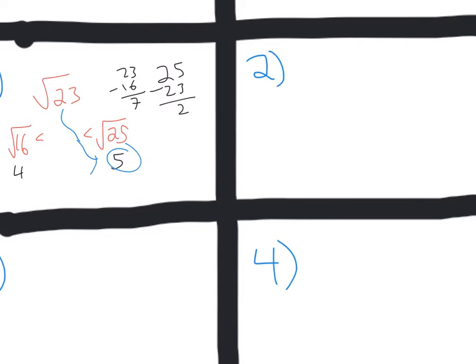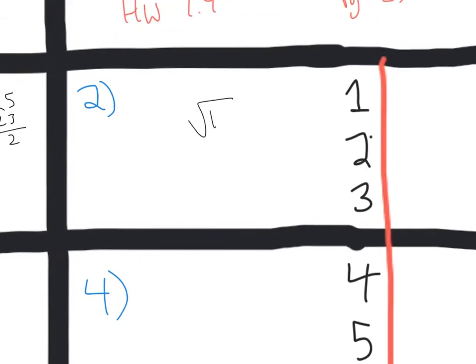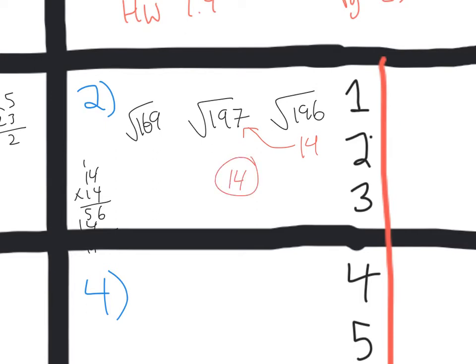Number 2, 197. Let's estimate what integer that would be really close to. I know that I can probably look at square root of 13, which is 169, and 14 would be 196. That's really close. And we know the square root of 196 is 14, so I'm going to say that's pretty close to that. 196 is close to 197, so if I had to estimate for number 2, I would say it is really close to 14.